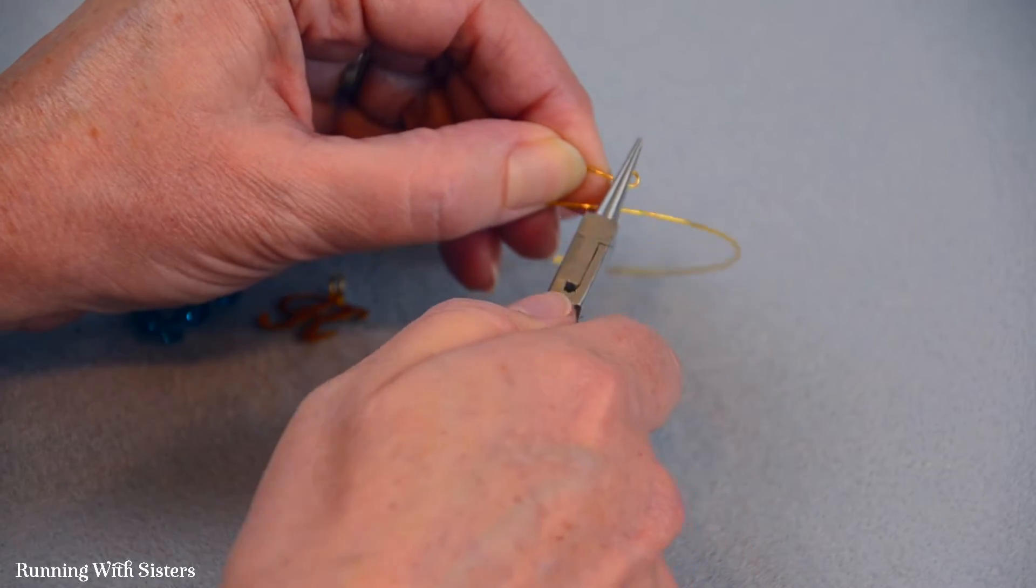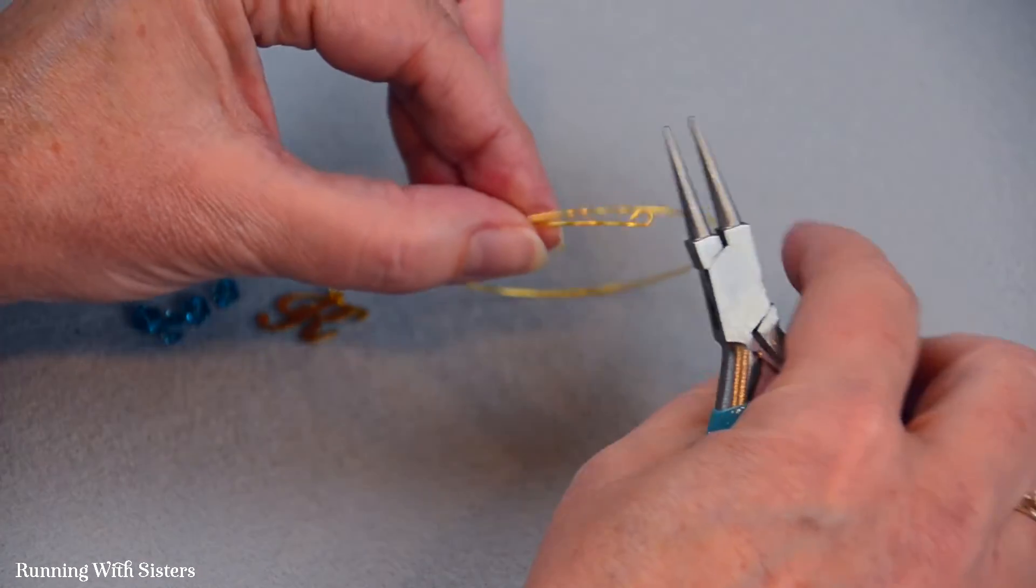That loop is, I'm flattening it, that loop is going to keep the beads from sliding off of our bangle.